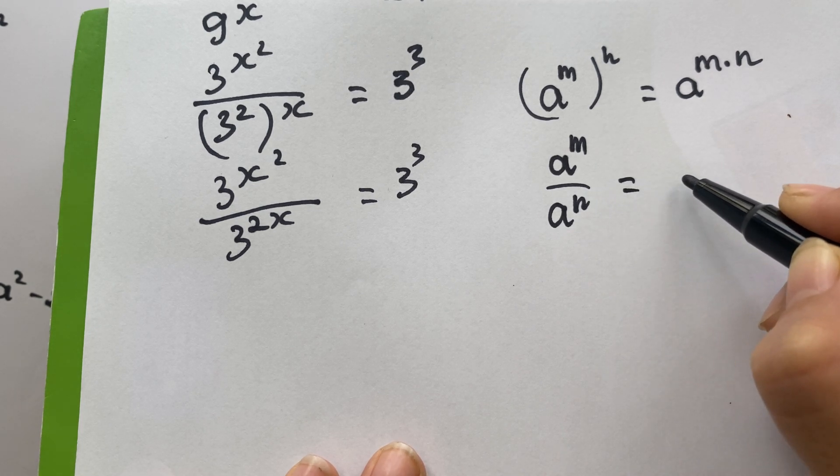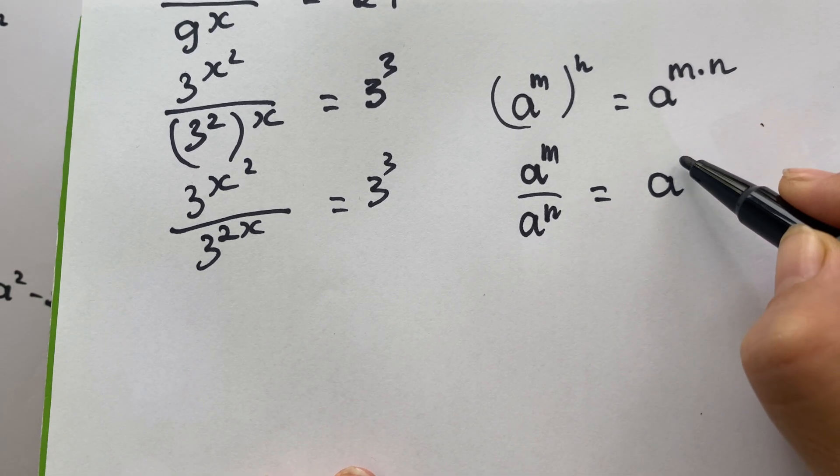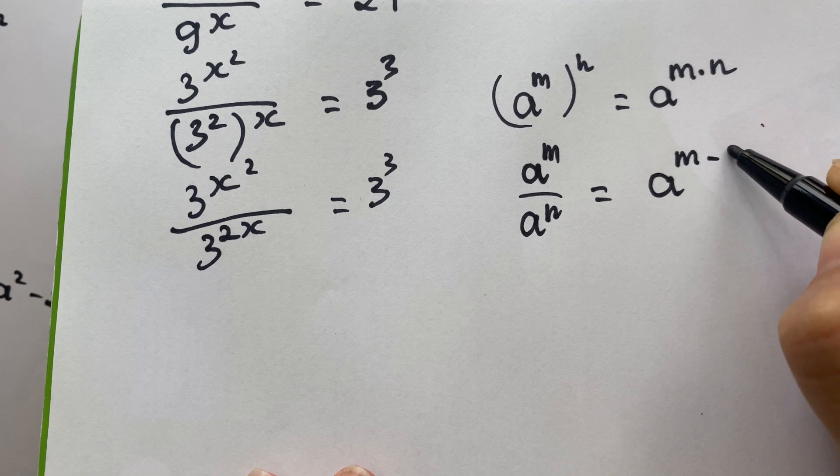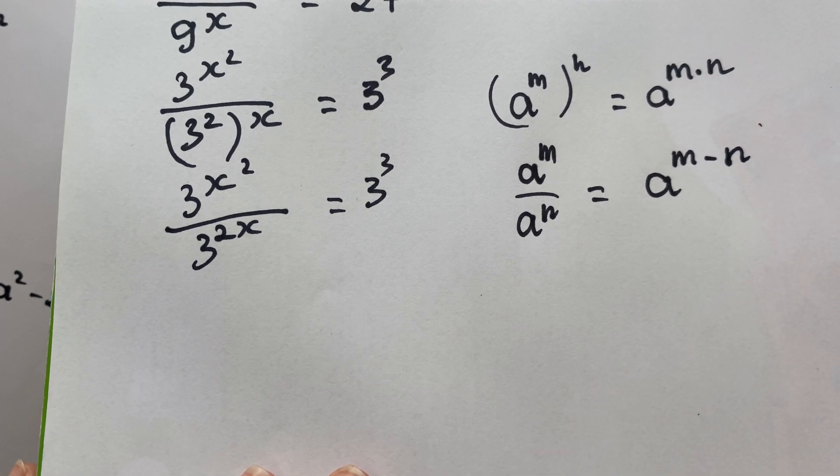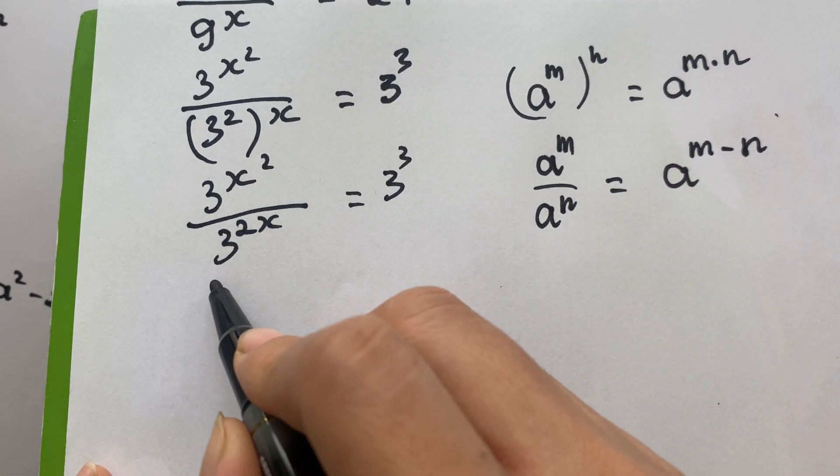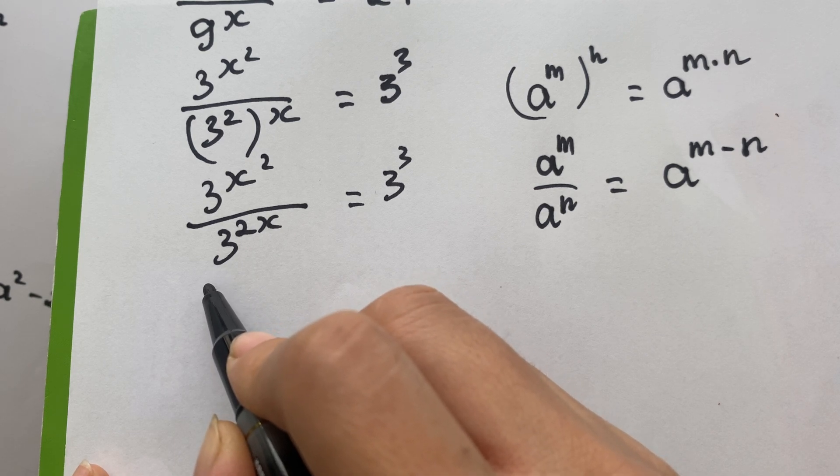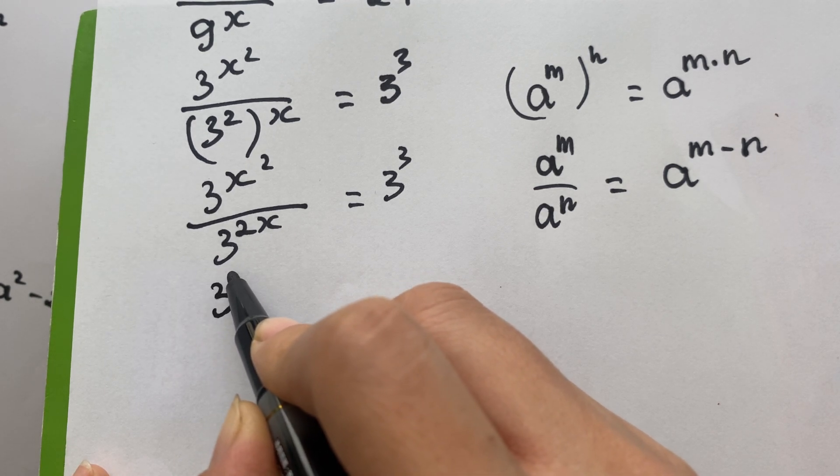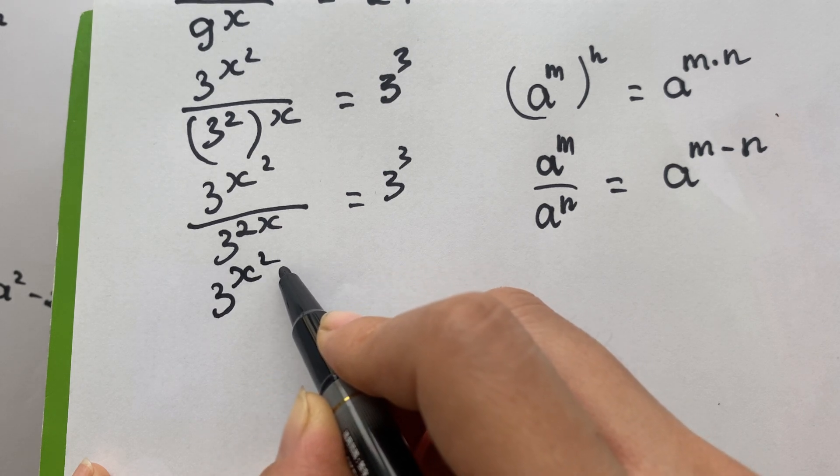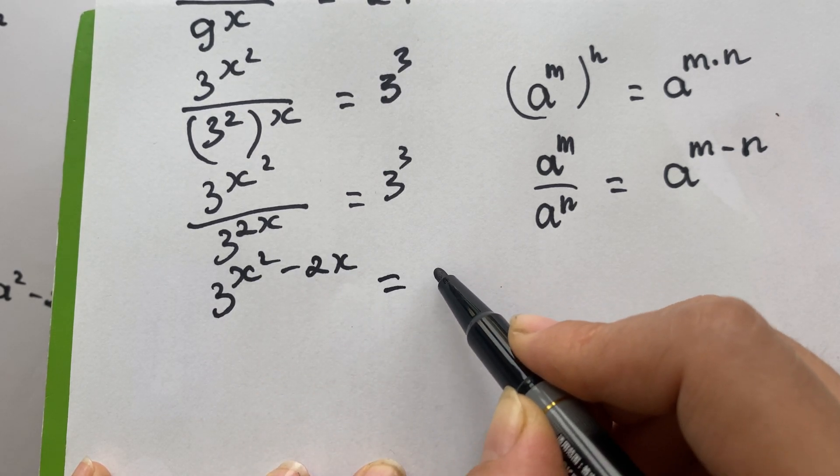And in this case we have 3 power x square minus 2x equals 3 power 3.